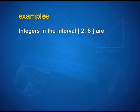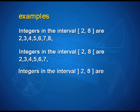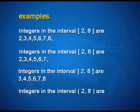Let us take up some examples. Integers in the closed interval [2, 8] are: 2, 3, 4, 5, 6, 7, and 8. Integers in the semi-closed interval [2, 8) are: 2, 3, 4, 5, 6, and 7. Integers in the semi-closed interval (2, 8] are: 3, 4, 5, 6, 7, and 8. Integers in the open interval (2, 8) are: 3, 4, 5, 6, and 7.